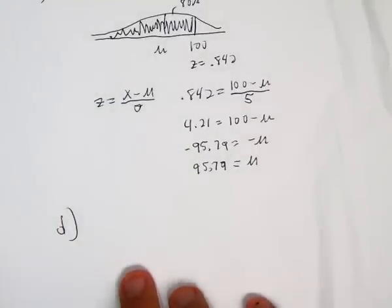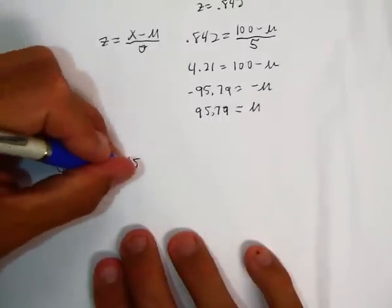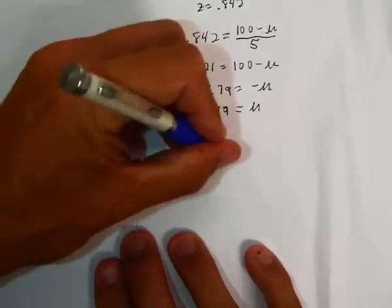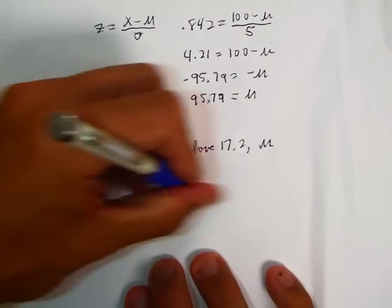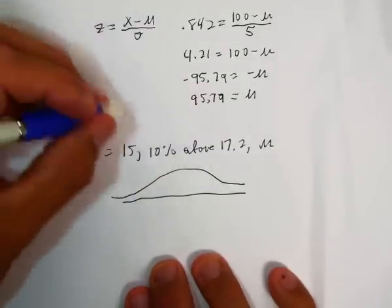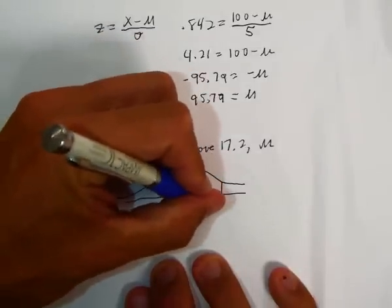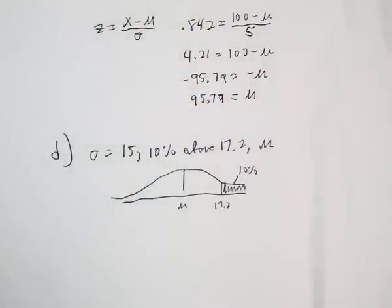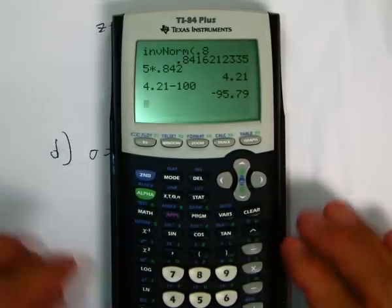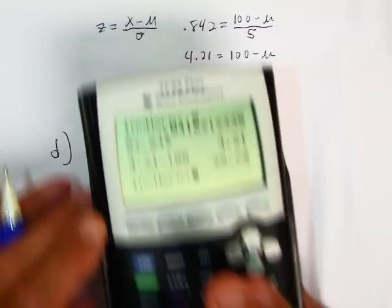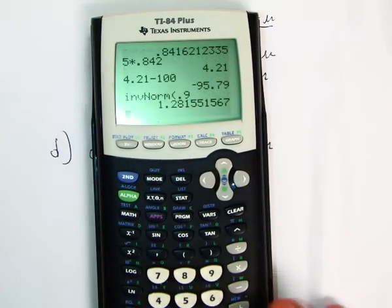The last one is part D. We know that sigma is 15 and we know that 10% are above 17.2, and again we want to know what mu is. So we draw a picture. We know that there's 10% above 17.2. We've got to figure out what z-score that is, so we're going to do inverse norm. This is 10% above, which means it's the 90th percentile. So we do inverse norm of the 90th percentile and we get 1.28.